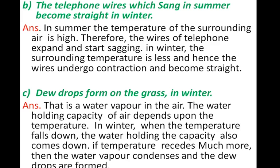Question: dew drops are formed on the grass in winter - give scientific reason. Answer: the water-holding capacity of air depends upon the temperature. In winter, when the temperature falls down, the water-holding capacity also comes down. If the temperature recedes much more, then the water vapors condense and dew drops are formed.